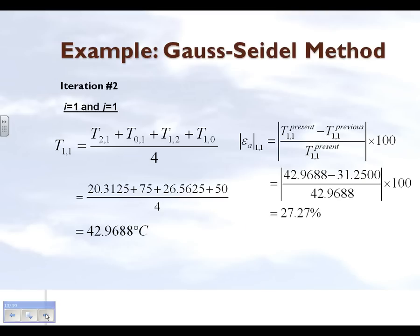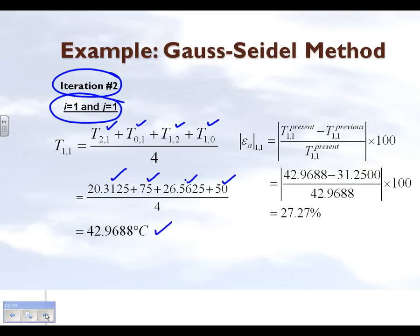For the second iteration, we again look at node 1,1 and write it in terms of its surrounding nodes. We substitute temperatures from the first iteration and boundary conditions. We get a temperature of 42.9688 degrees Celsius at node 1,1. The absolute relative approximate error is the present temperature minus the previous temperature divided by the present temperature: (42.9688 - 31.25) / 42.9688 gives an absolute relative error of 27.27%.